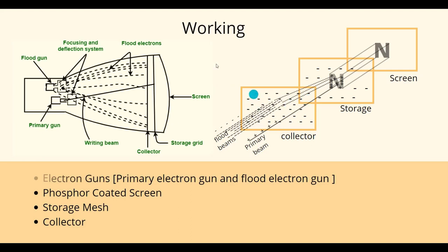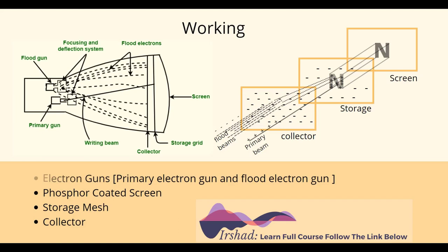That is the complete process of how DVST works. The problem arises when we have to erase or delete the image or any part of it. The only way to do this is to apply a positive charge to the storage grid, which neutralizes all the charges and removes the image. However, this causes momentary flashes, which are unpleasant to the viewer. The only option is to neutralize all the intermediate screens, which is a complex task. That's why deleting or erasing anything from the DVST is quite difficult. Additionally, it does not offer many color choices.